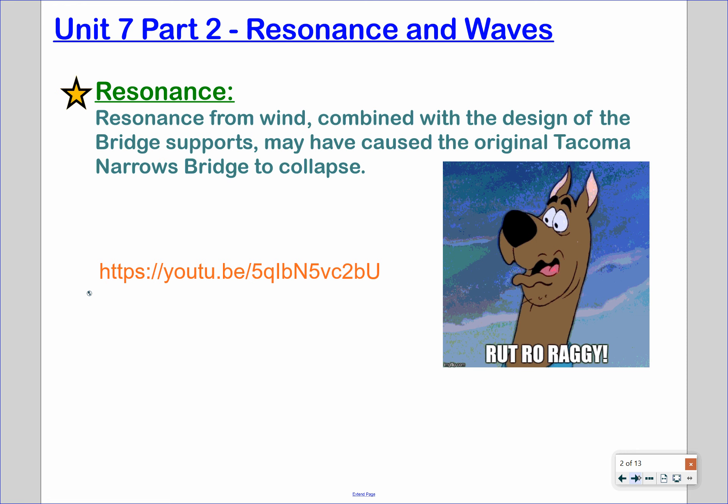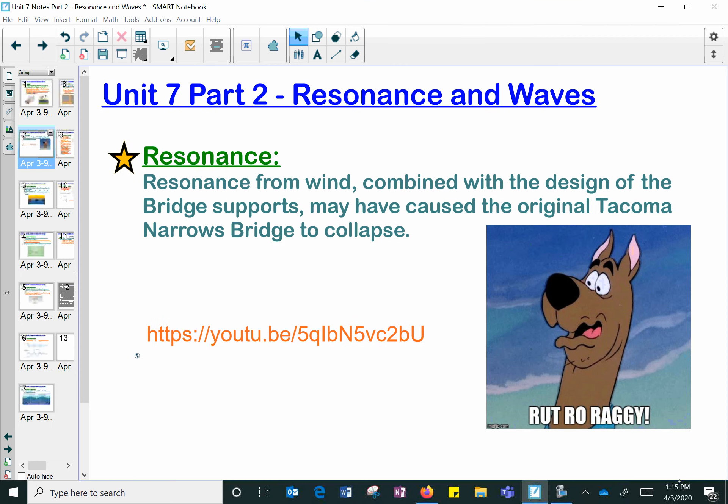So we can actually look at a real world example. The Tacoma Narrows Bridge was actually a bridge that collapsed. It collapsed because of resonance in an increase in amplitude of the waves that were traveling across the bridge. So if we take a look here, we can go to a short video to watch.